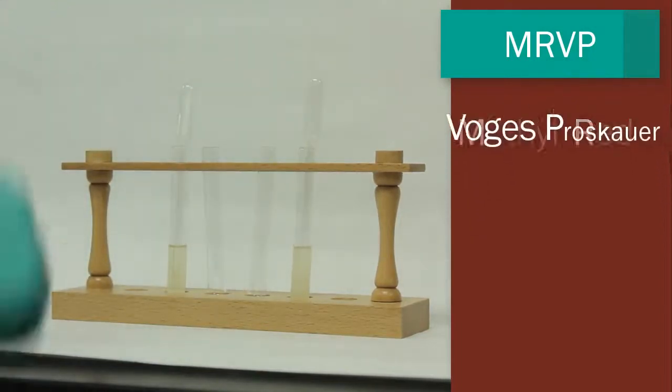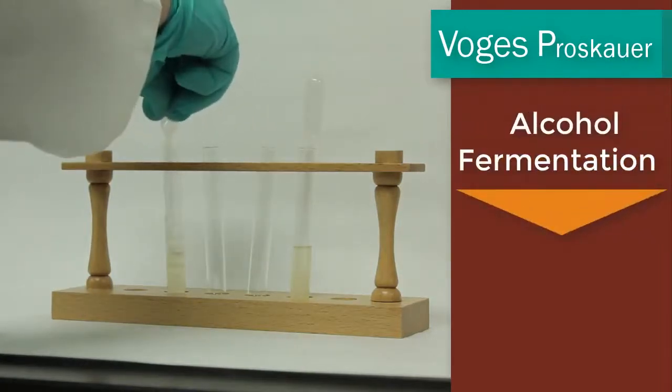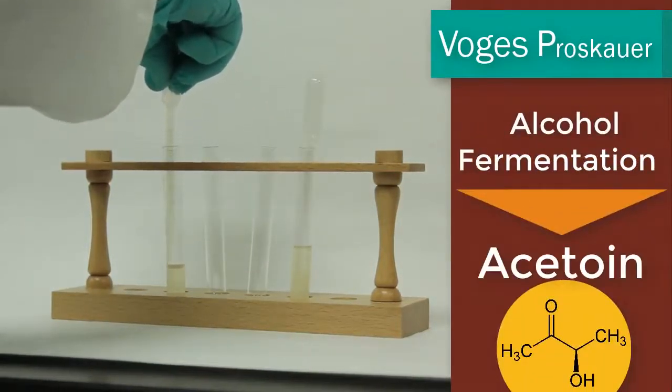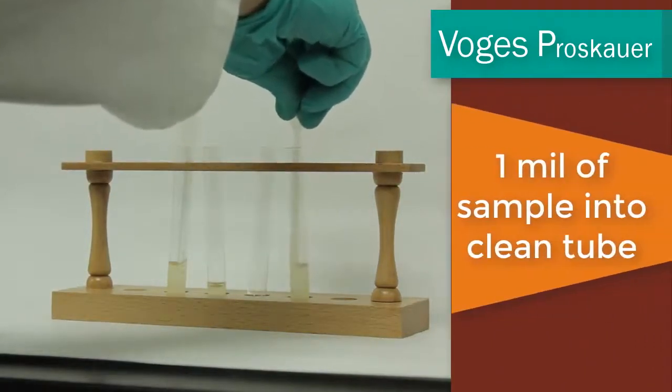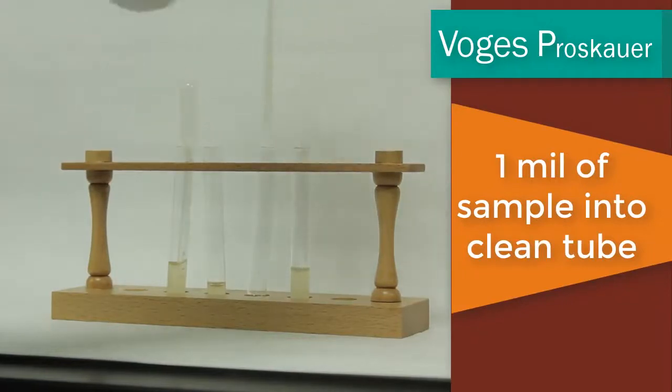In this test you're going to be looking for the alcohol fermentation product called acetoin. In order to perform the Voges Proskauer test, take about 1 ml out of each of your test tubes and put them into a clean separate tube.